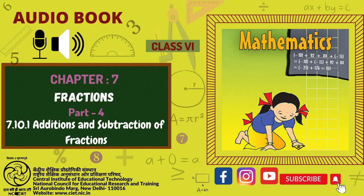2. Solve: A. 1 upon 18 plus 1 upon 18. B. 8 upon 15 plus 3 upon 15. C. 7 upon 7 minus 5 upon 7. D. 1 upon 22 plus 21 upon 22. E. 12 upon 15 minus 7 upon 15. F. 5 upon 8 plus 3 upon 8. G. 1 minus 2 upon 3, 1 is equal to 3 upon 3. H. 1 upon 4 plus 0 upon 4. I. 3 minus 12 upon 5.